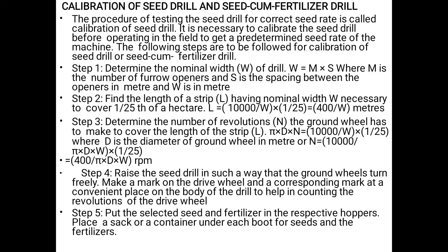That is the length of strip. Step 3: Determine the number of revolutions, that is n, the ground wheel has to make to cover the length of strip L. L equals π × d × n, where d is the diameter of the ground wheel in meters. So the final equation is: n equals 10,000 divided by (π × d × W).